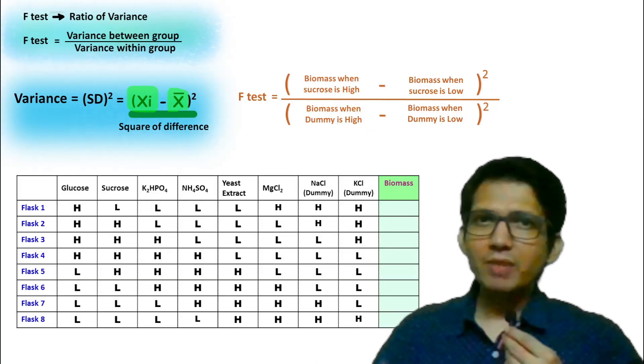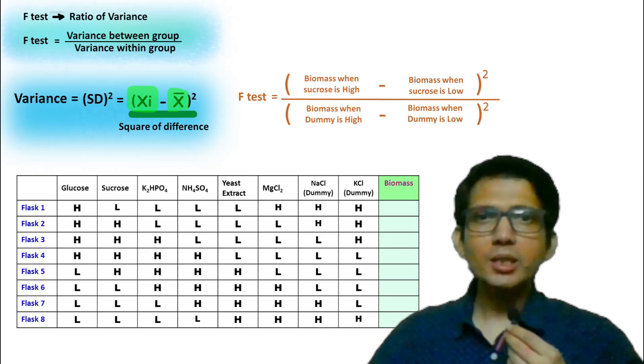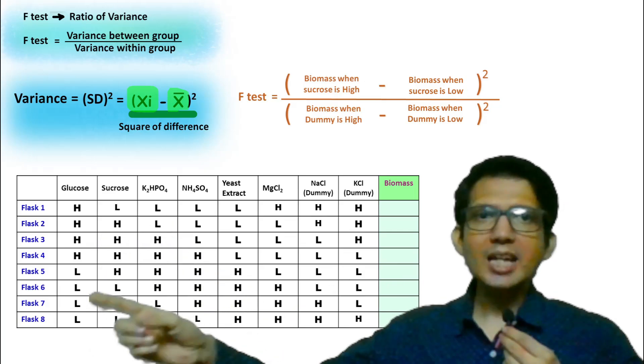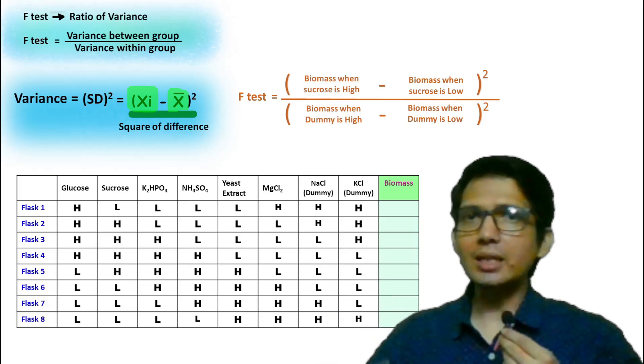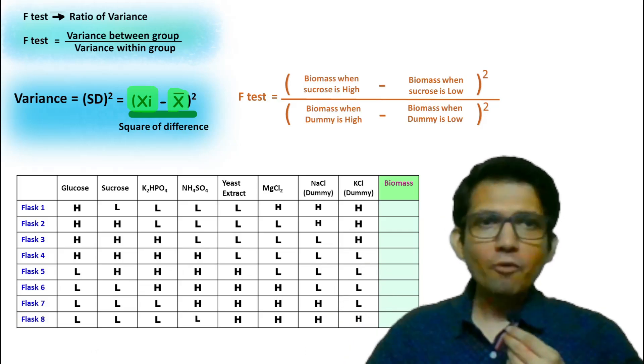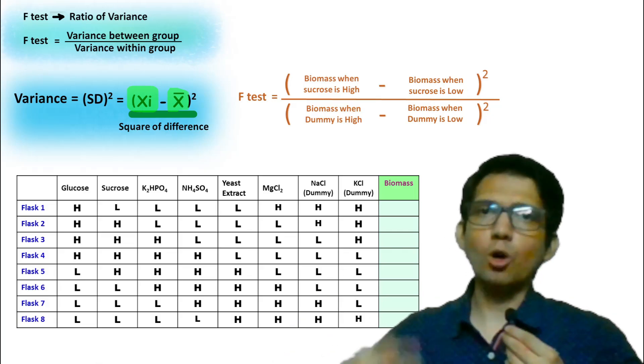In a similar way, when it comes to selecting important media components for media optimization, instead of presence and absence, we use high and low concentration. This is because if a component is completely absent, then obviously the organism will not grow.